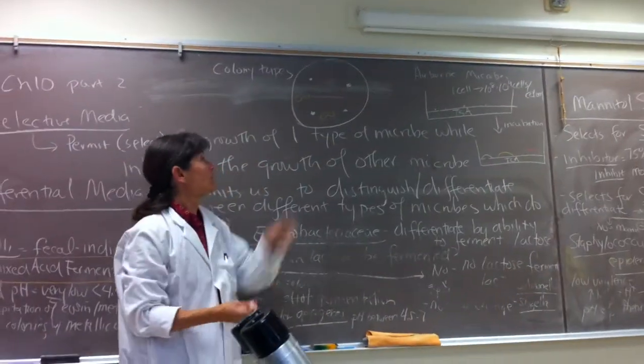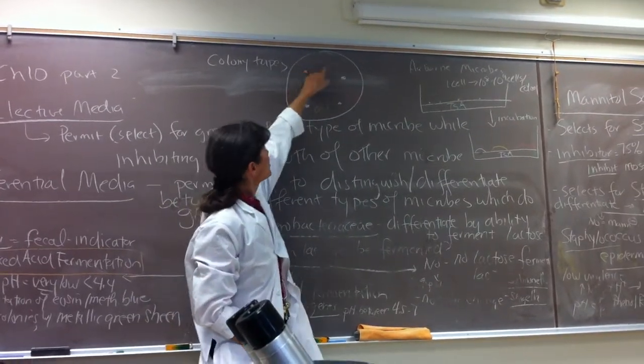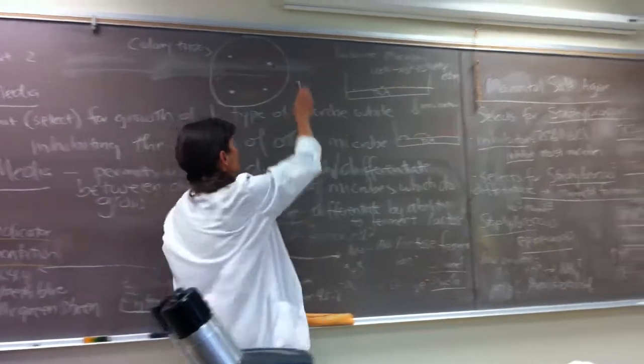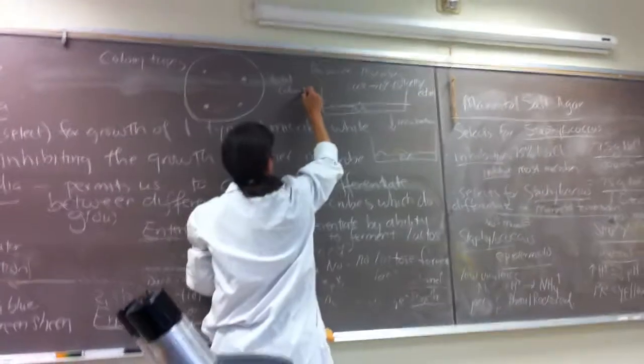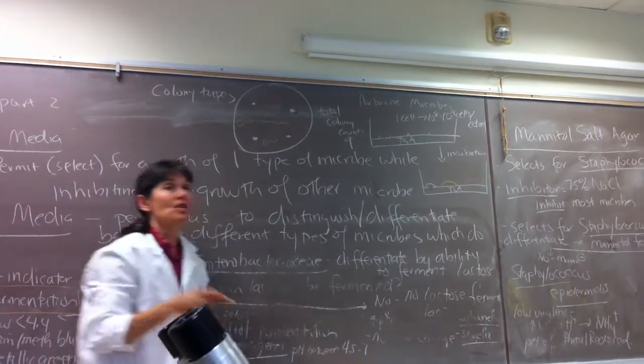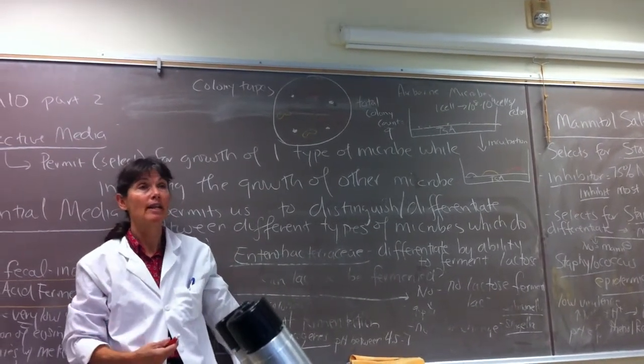So just so we can practice, if we ask for the total number of colonies, we just count them. One, two, three, four, five, six, seven, eight, nine. So total colony count equals nine. So the presumption is nine microbes landed on the plate were able to grow from the colonies.